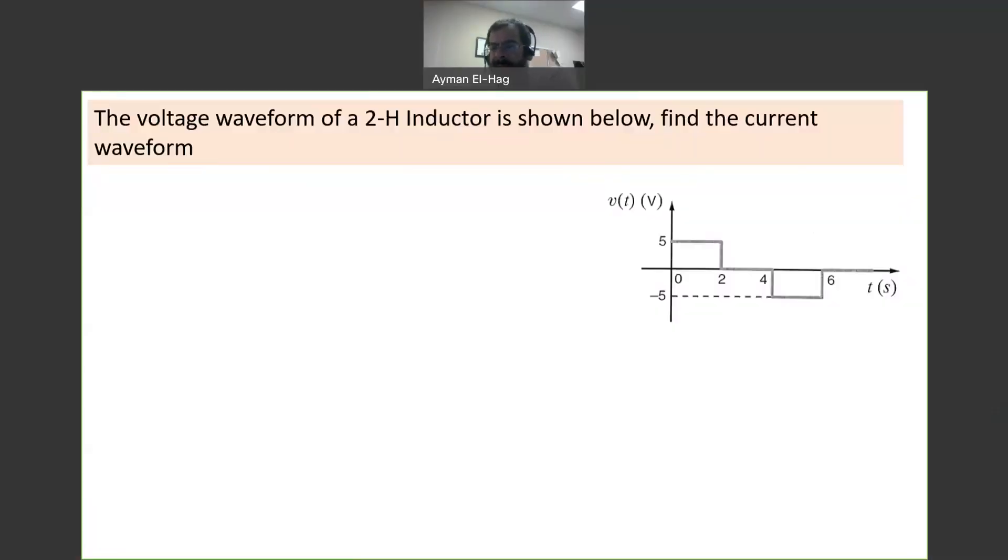Hi everyone, and welcome back to the series of circuit practice problems. We have another question here asking for the waveform of a 2-henry inductor. This is the voltage waveform shown, and we want to find the current.